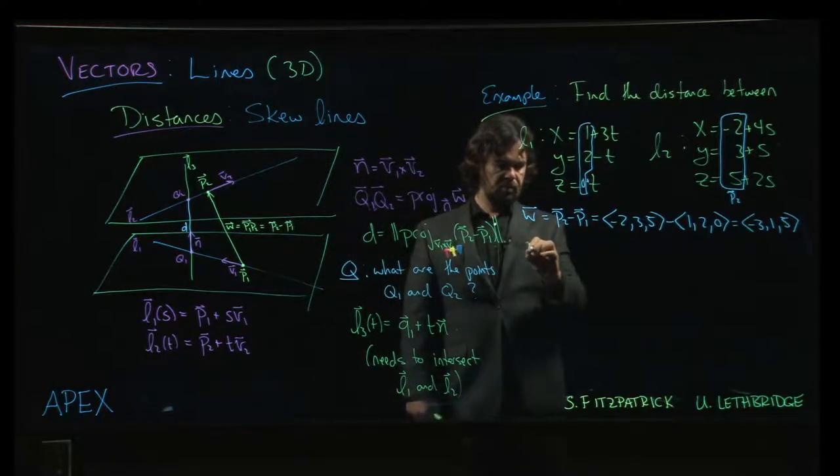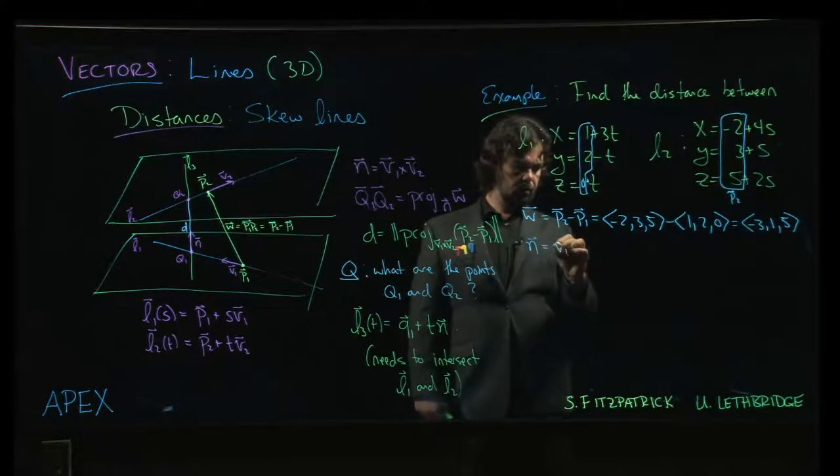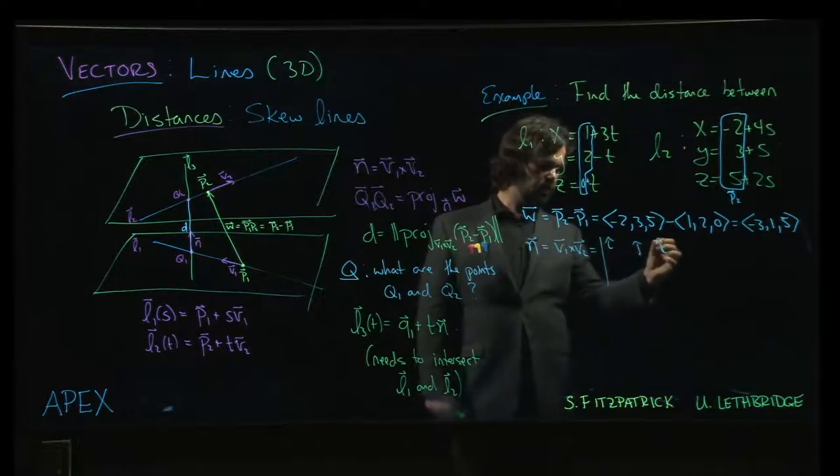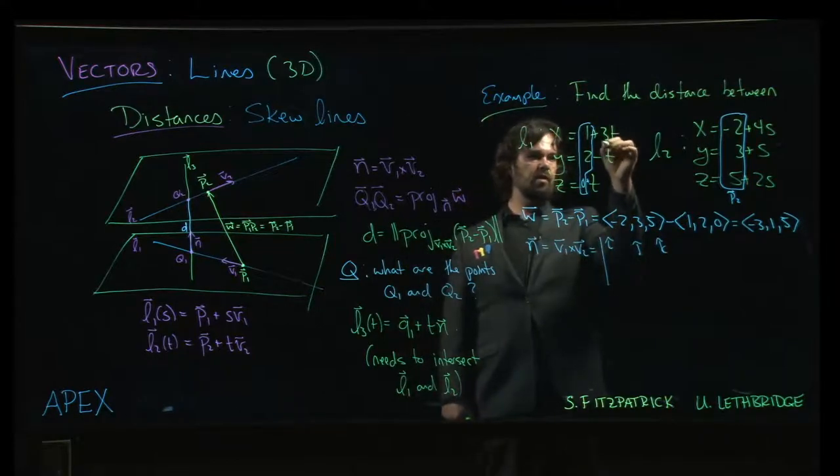Now we need this vector which is orthogonal to both of the lines, and in particular it is orthogonal to the two direction vectors. So we are going to use cross product to get that. So v1, we look at the coefficients here: 3, minus 1, 1.